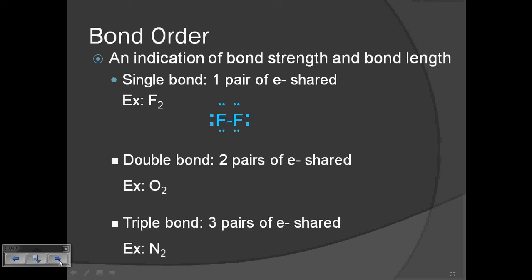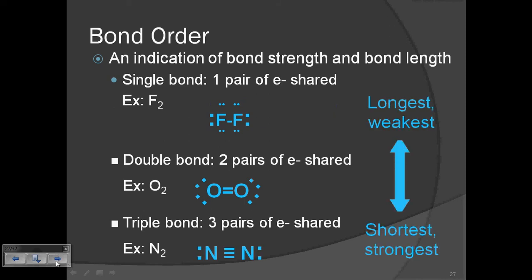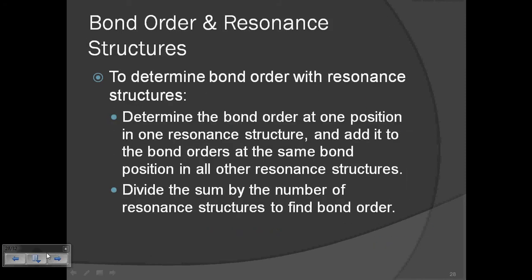But if you have a resonance structure where you have a traveling double bond, then how do you figure out the bond order? In resonance structures where you have a traveling double bond, like carbonate, to figure out the bond order, you have to look at two specific positions. So if you wanted to know what is the bond order between carbon and this first oxygen, which is on top.